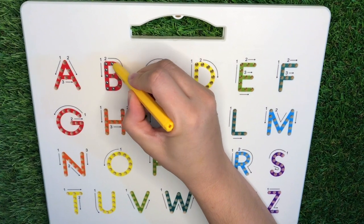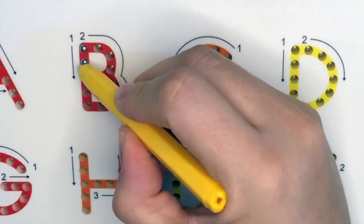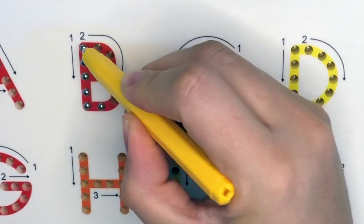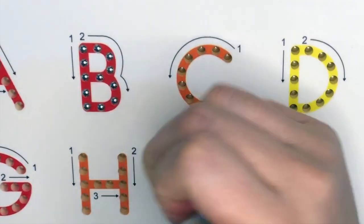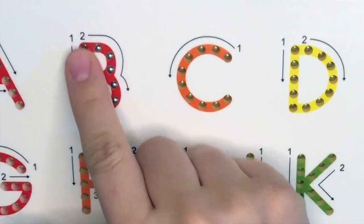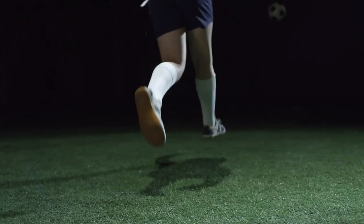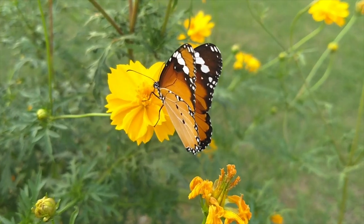Next letter, letter B. Pull down, go to the top, around and in, and back and around. B is for ball, butterfly, and banana.